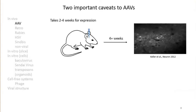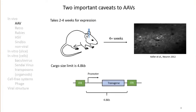Two important caveats for AAVs: first, it takes two to four weeks for expression — most people wait four weeks or more for robust plateau expression. On the flip side, expression lasts months to years. The biggest downside is the cargo limitation: you can only pack 4.8 KB between the ITRs. Anything beyond that causes a sharp drop in titers and the virus may fail to package into the capsid at all. This is a real problem, and we'll discuss AAV in more detail next lecture.